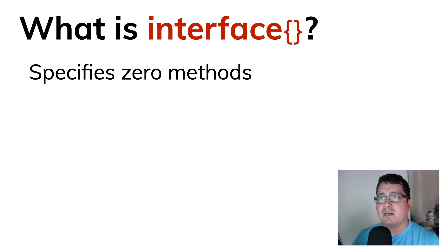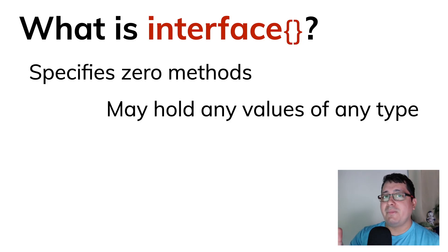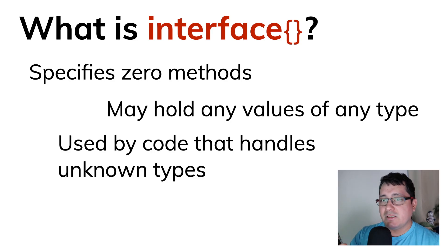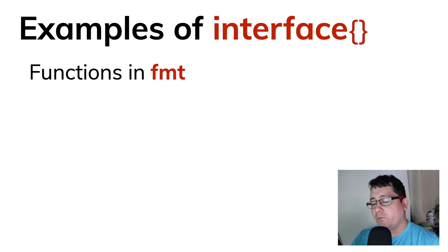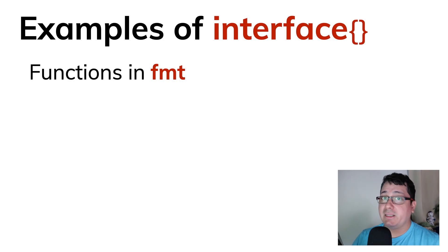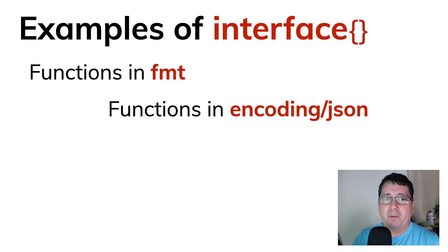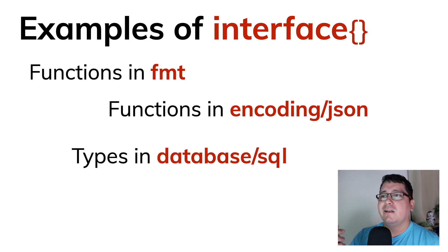Now let's talk about the empty interface. The empty interface defines zero methods, so literally any type implements the empty interface. It may hold values of any type and is used by code that handles unknown types. Examples include the fmt package functions like Sprintf, Errorf, and Printf; the encoding/json package with functions like Marshal and Unmarshal; and the database/sql package with its Value and Scanner types.